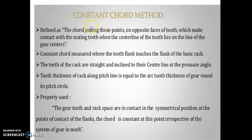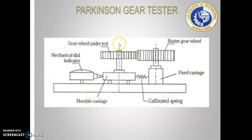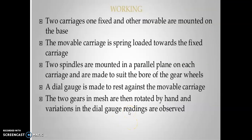In the constant chord method, the chord joins points on opposite faces of the tooth where it contacts the mating teeth when the center line of the tooth lies on the center line of the gear centers. The constant chord is measured where the tooth flank touches the flank of the basic rack. In the Parkinson's gear tester, the gear wheel under test is placed on a movable carriage alongside a master gear wheel on a fixed carriage with a calibrated spring, and any deviation is measured using a mechanical dial indicator.